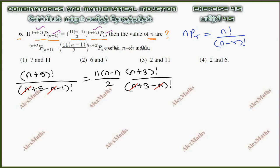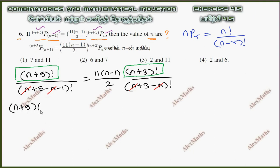Now compare. This is (n+5) factorial and (n+3) factorial. (n+5) factorial on the left and (n+3) factorial on the right.